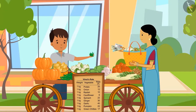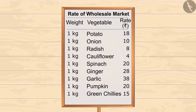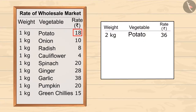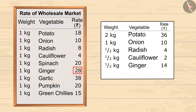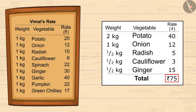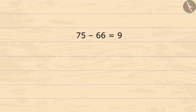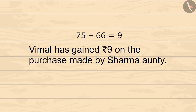Sharma auntie gave 75 rupees to Vimal — can you guess how much profit Vimal has gained? Let's calculate together. According to the wholesale market price, Sharma auntie should give 36 rupees for 2 kg potatoes, 10 rupees for 1 kg onion, 4 rupees for half a kg radish, 2 rupees for half a kg cauliflower, and 14 rupees for half a kg ginger — a total of 66 rupees. But according to Vimal's pricing, she paid 75 rupees. On subtracting 66 from 75, we get 9 — so Vimal gained 9 rupees profit on Sharma auntie's purchase.